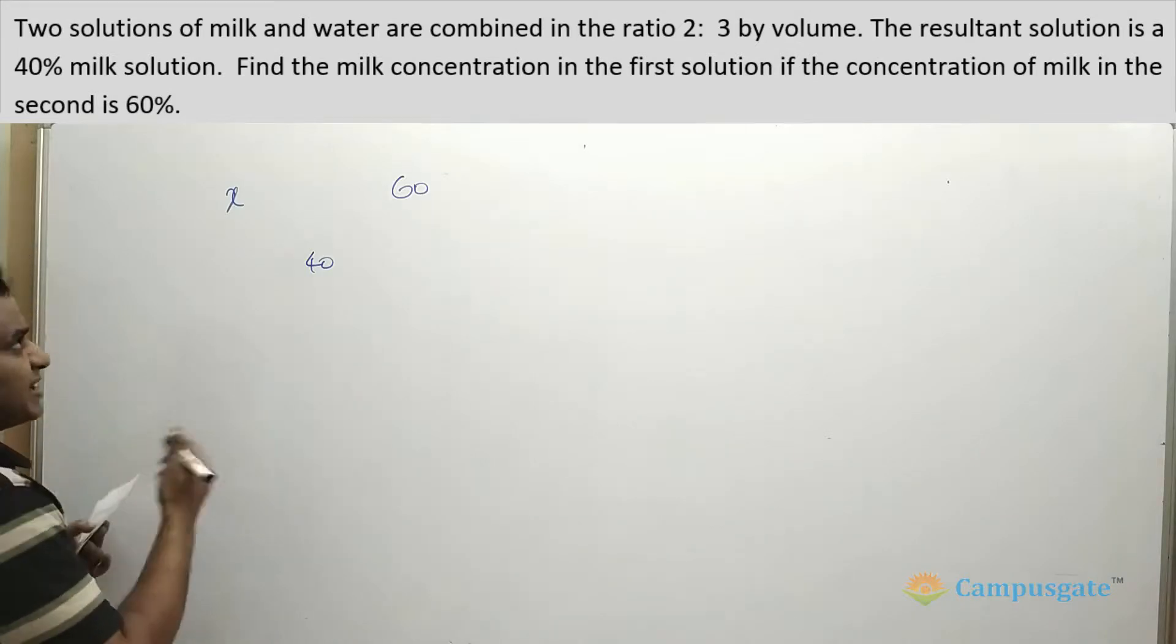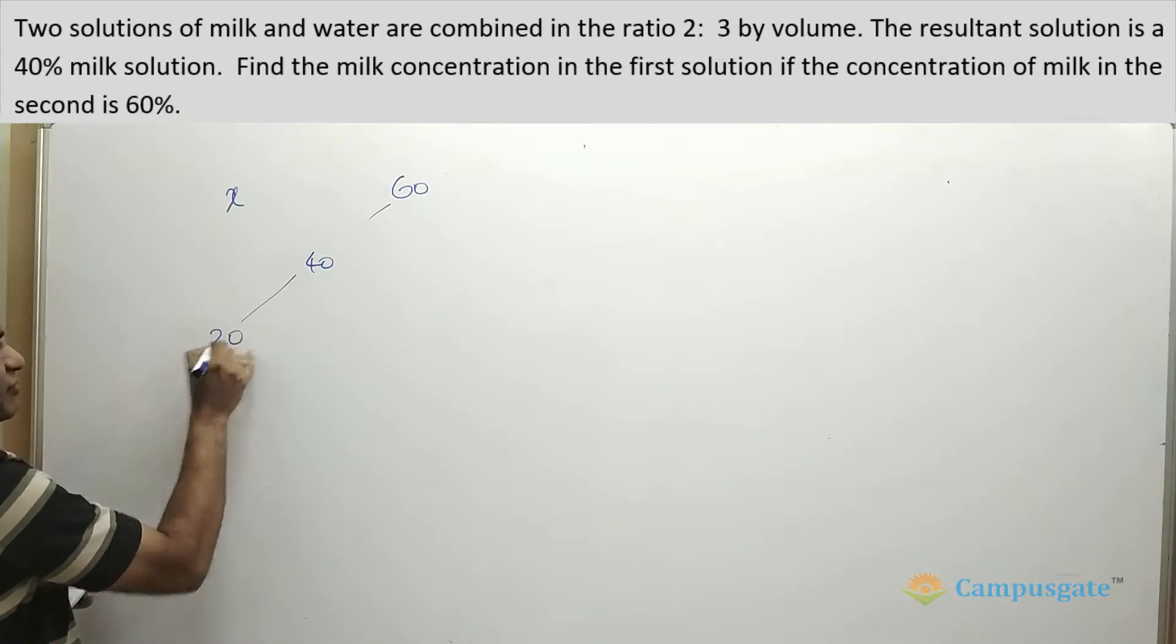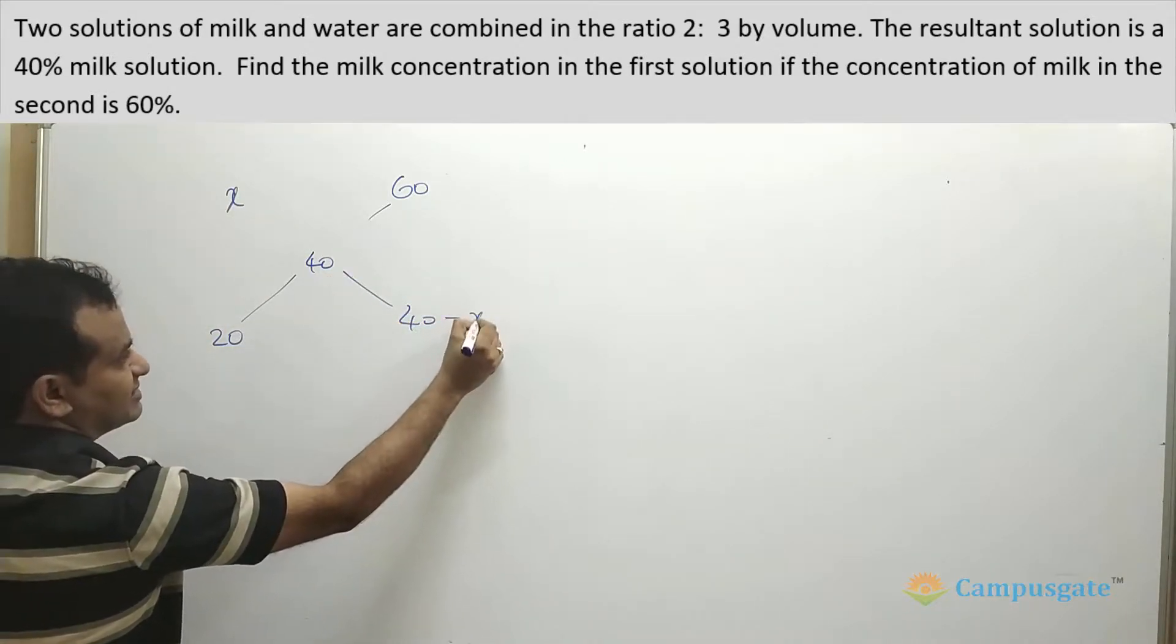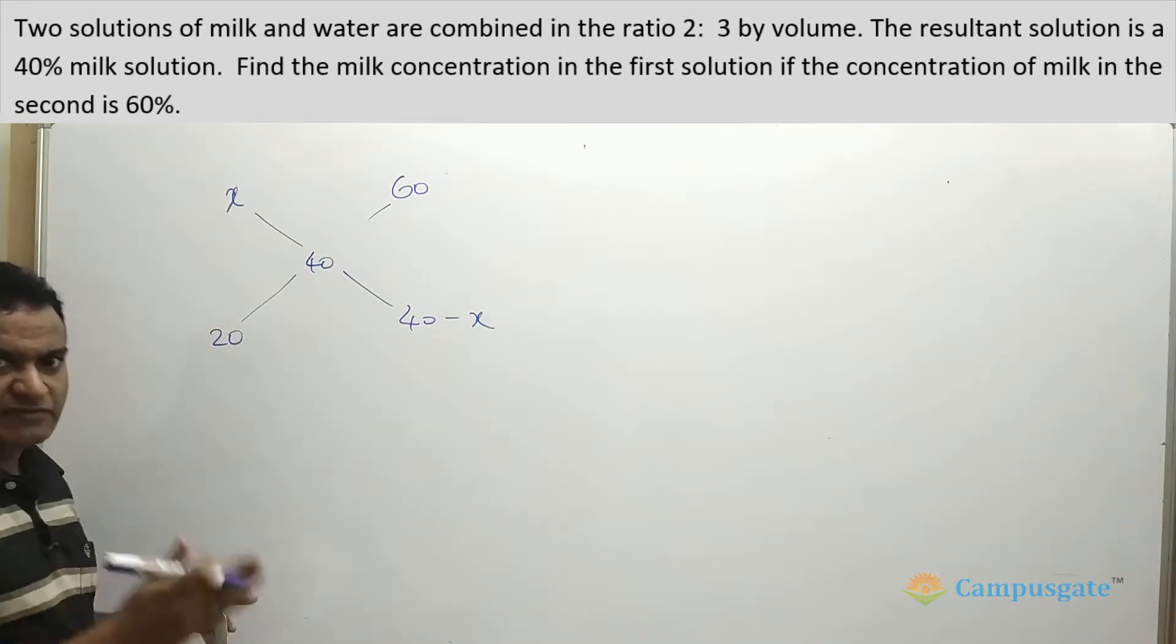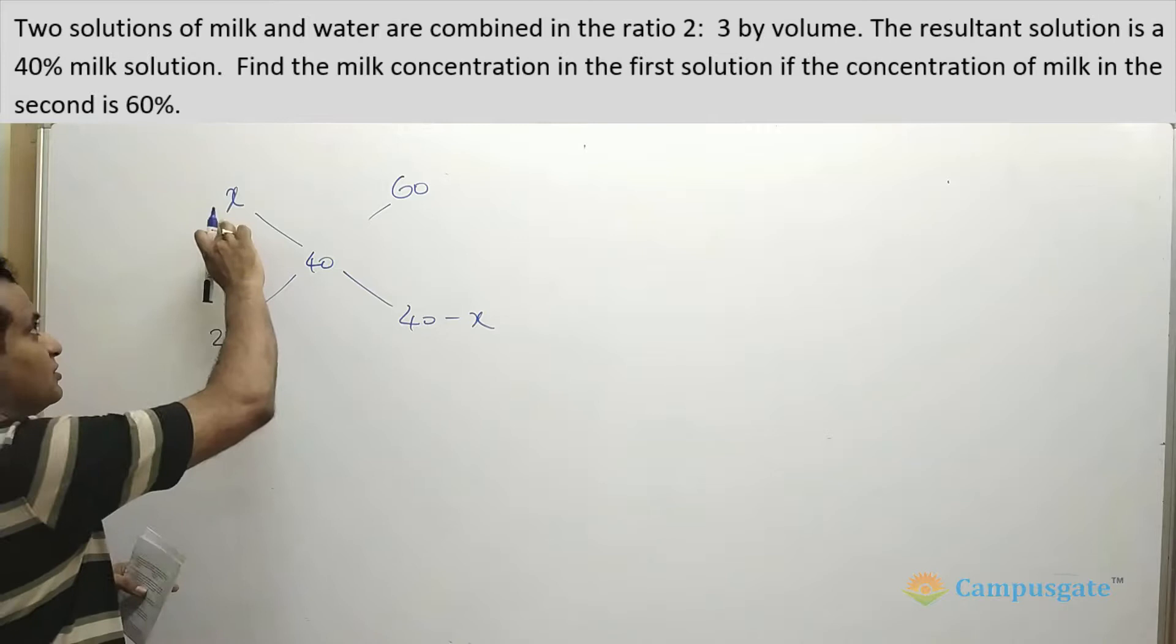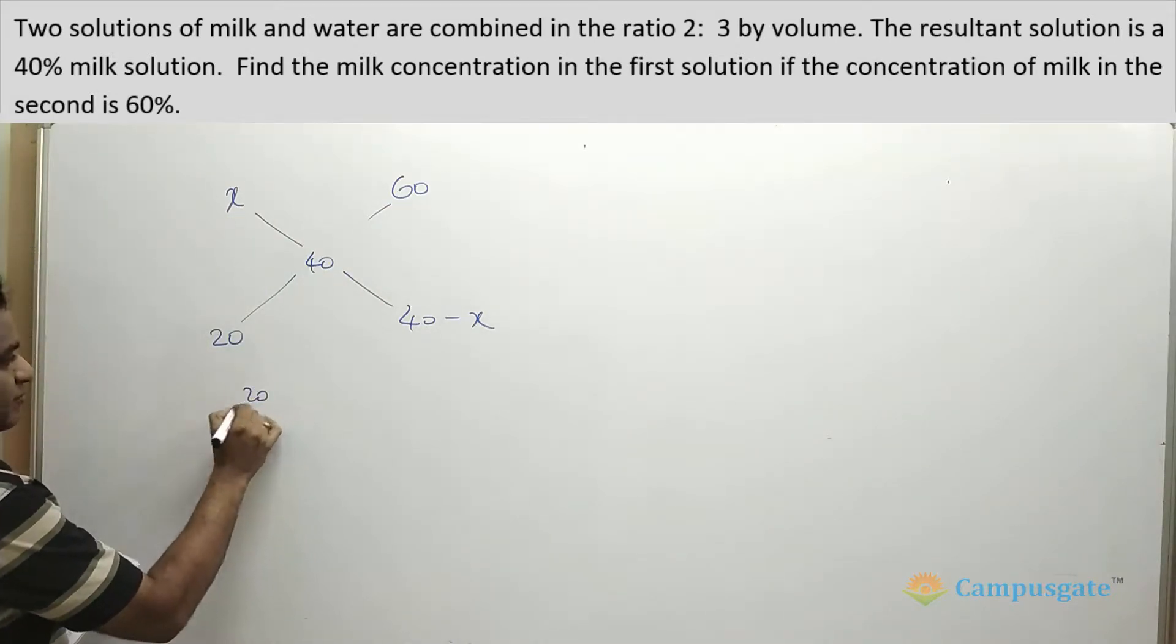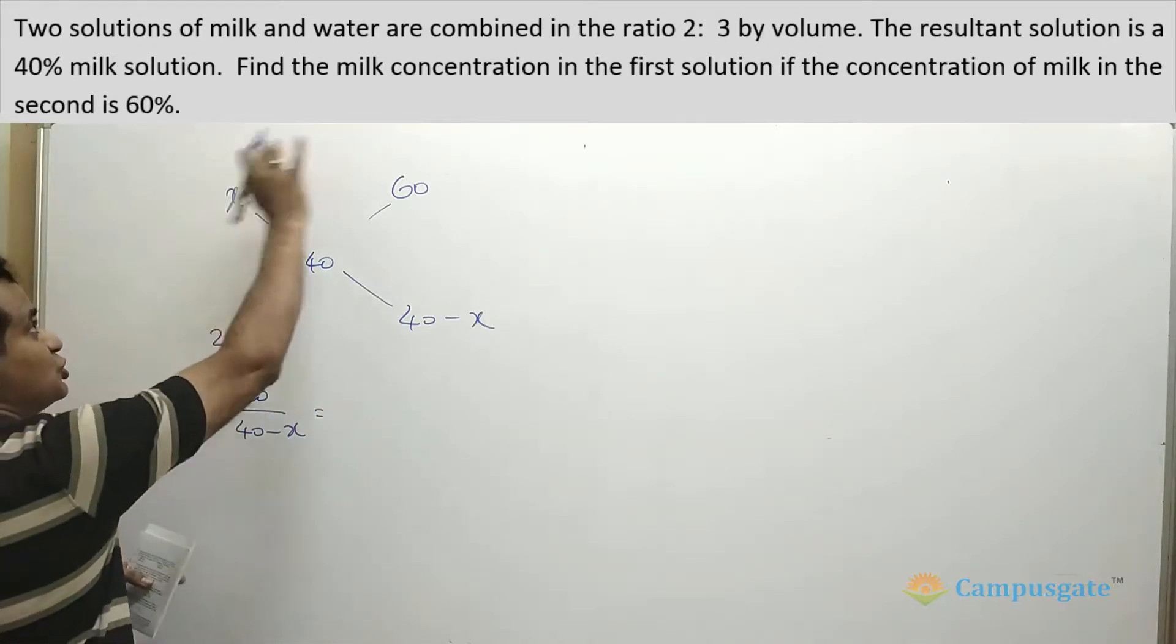Now let us apply this allegation rule. If you apply this allegation rule, 60 minus 40 will give you 20, and 40 minus x. So you can write 40 minus x here. Now the ratio between these two will give you in what ratio these two solutions are mixed. So 20 by 40 minus x will give you in what ratio these two are mixed.